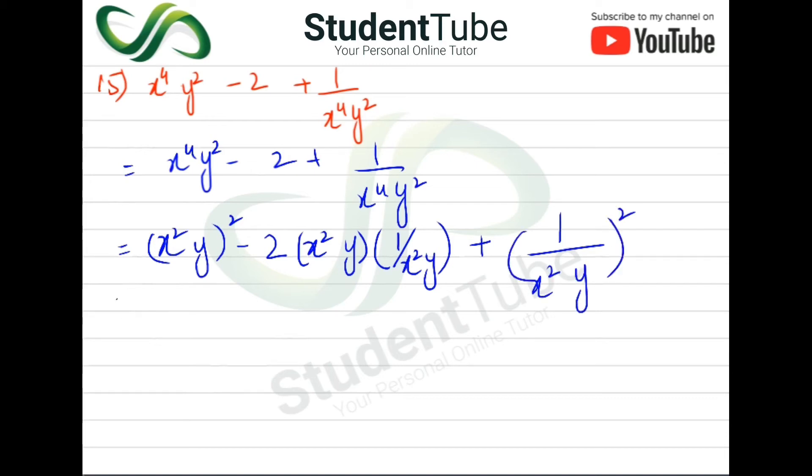So here, as we know that (a - b)² = a² - 2ab + b², here a is our x²y, and b is 1 over x²y.